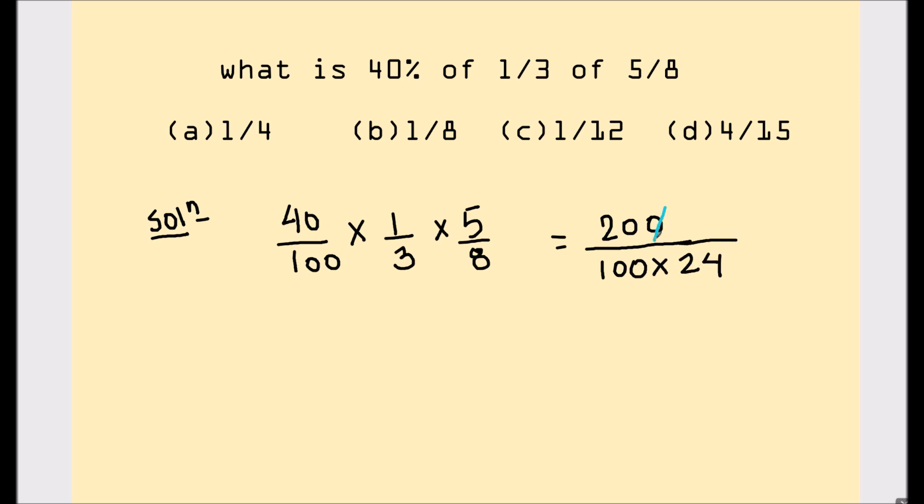So the zeros in the 100 and 200 get cancelled out. So we are left with 2 in the numerator and denominator is 24. And 2 by 24 can be simplified to 1 upon 12.